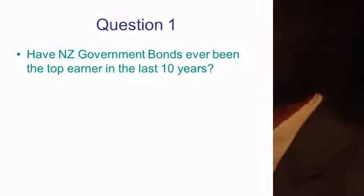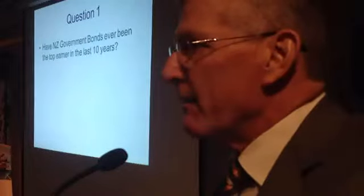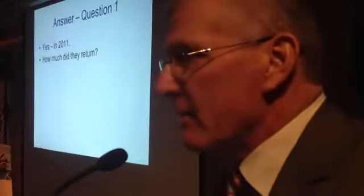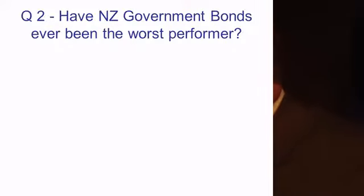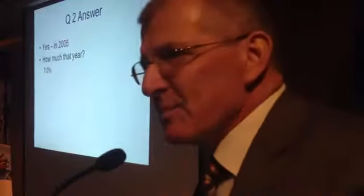Let's have question one. Have New Zealand government bonds ever been the top earner in the last 10 years? Got a yes? No? The answer was yes. Those tables that said no. Top earner in 2011. How much did government bonds offer there? 13.3%. Not bad from a fixed interest government bond. Have government bonds ever been the worst performer? Yes, in 2005. How much in that year? 7%, and they were the worst performer.